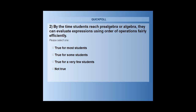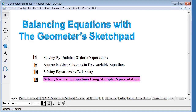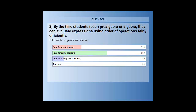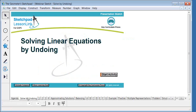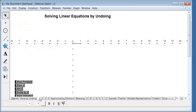Looking at the results, it seems most students — not every student, but most — are pretty efficient with order of operations. It's something we focus on in elementary and middle school, so hopefully by the time they get to pre-algebra and algebra you may have to do a little reteaching, but for the most part they're coming with a fairly good understanding. Solving equations by undoing makes sense because we're building on that knowledge.